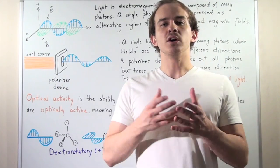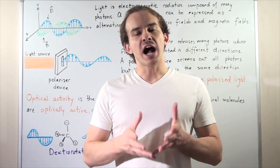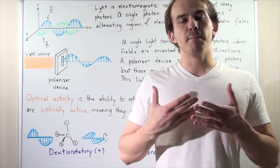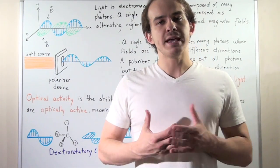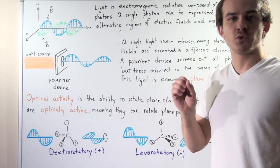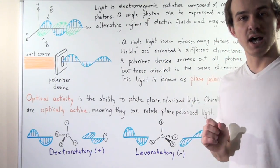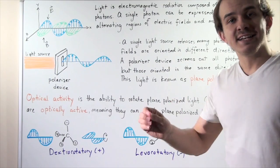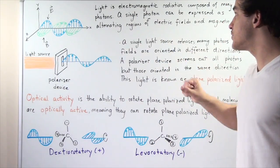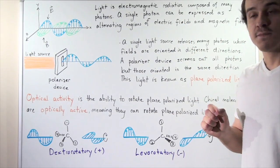In this lecture, we're going to discuss optical activity of chiral molecules. Let's begin by giving some background information about light. Light is electromagnetic radiation composed of many photons, and a single photon can be expressed using alternating regions of electric fields and magnetic fields.